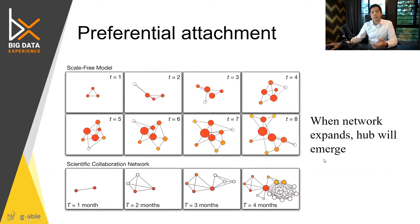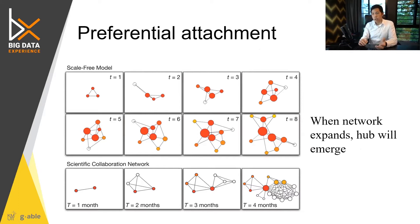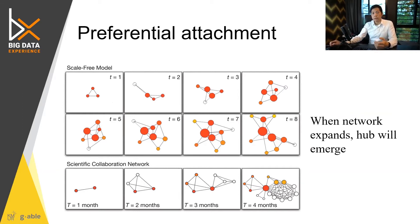This can be seen throughout different types of networks, although some networks may not follow these properties, but most do. For example, if you think about a group of people — when you gather a lot of people together, there'll be some people that are better in collaboration, better at coordinating with other people. And that individual often becomes the hub node.